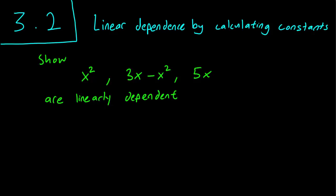So we have three functions here: x squared, 3x minus x squared, and 5x. And we need to show that they are linearly dependent.